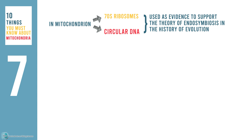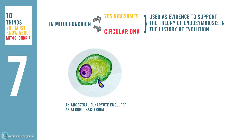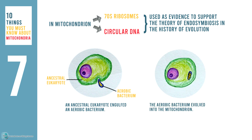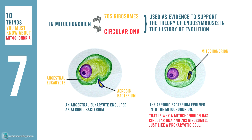Scientists believe that an ancestral eukaryote engulfed an aerobic bacterium, which then evolved into the mitochondrion. That is why a mitochondrion has circular DNA and 70S ribosomes, just like a prokaryotic cell.